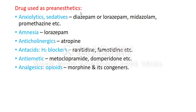Some drugs used as pre-anaesthetic agents: anxiolytics and sedatives include diazepam, lorazepam, midazolam, and promethazine. Amnesia-producing agents include lorazepam. Anticholinergic agents include atropine. Antacids and H2 blockers include ranitidine, famotidine. Anti-emetic drugs include metoclopramide and domperidone. Opioid analgesics include morphine and its congeners. These are the categories and examples of drugs used as pre-anaesthetic agents.